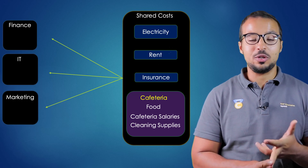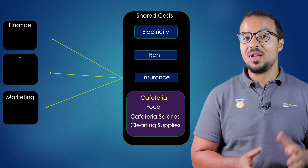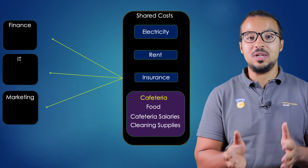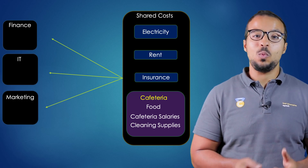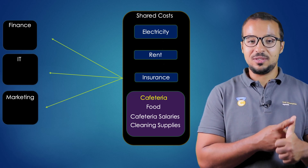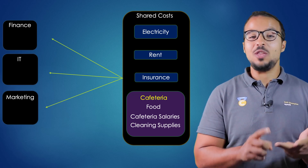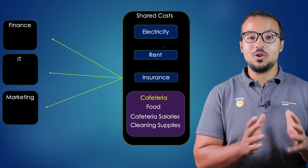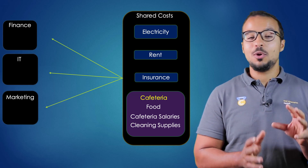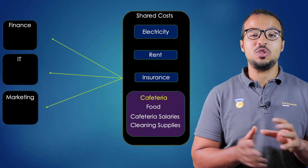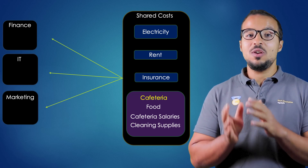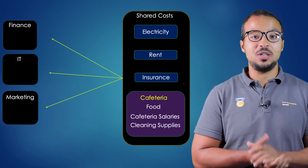To understand cost allocation cycles, let's take a real-life example. We have an administrative building that includes all the different departments: accounting, information technology, marketing, human resources, and so on. We also have a cafeteria or restaurant where everyone in the building eats. We have different cost centers for each department and one cost center for shared expenses.